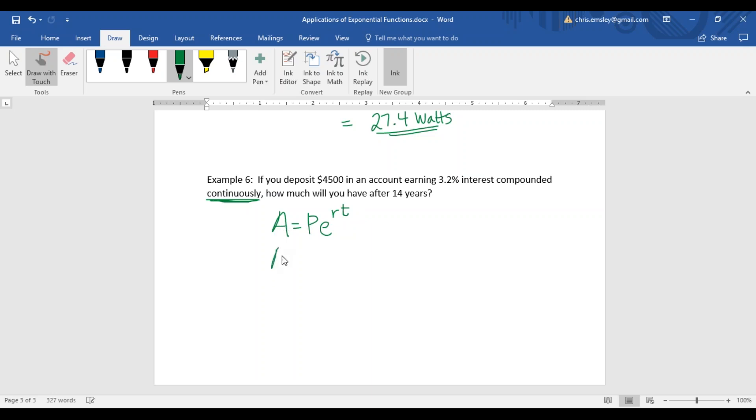A is the amount we're going to end up with. P is our starting value, which is 4500. E to the r, which is 0.032, and t is 14. We want to know how much we'd have after 14 years.